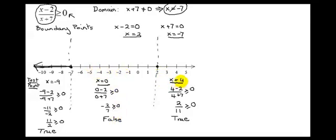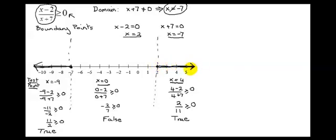I can pick any point bigger than 2 — I picked x equals 4. Plugging 4 into my original inequality: is 4 minus 2 over 4 plus 7 greater than or equal to 0? Is 2 over 11 greater than or equal to 0? True. Therefore, I want this region, so I'm going to shade it in. My solution set consists of this region and this region.